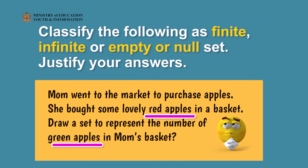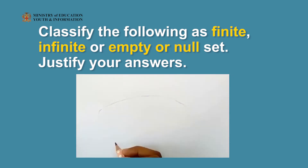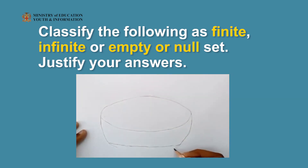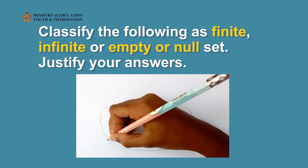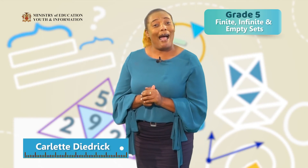Thirdly, your teacher gave you this scenario: Mom went to the market to purchase apples. She bought some lovely red apples in a basket. Draw a set to represent the number of green apples in mom's basket. Wonderful, boys and girls — there are no green apples in mom's basket, therefore the set that represents mom's basket would be an empty set. Well done, boys and girls! I hope you had fun identifying sets that are finite, infinite, and empty. See you next time!